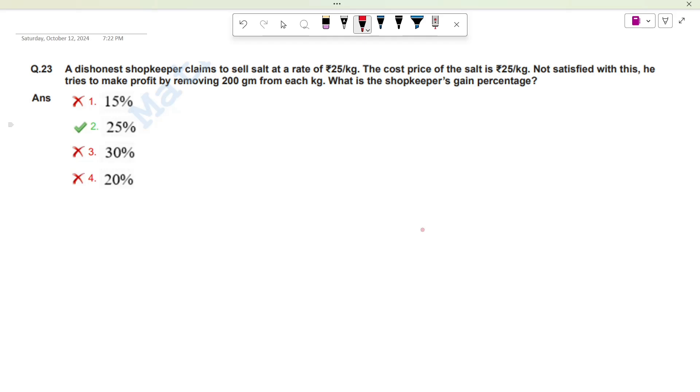Not satisfied with this, he tries to make a profit by removing 200 grams from each kg. What is the shopkeeper's gain percentage? The first thing I want to know is how much is the sell? The sell is also 25 rupees per kg. The cost price is also 25 rupees per kg.